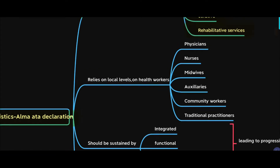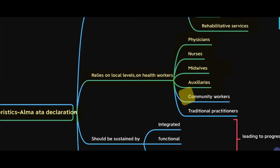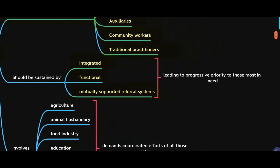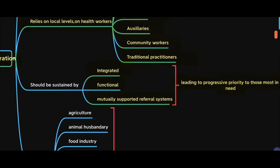The second characteristic is that primary health care on the local level is run by physicians, nurses, midwives, auxiliaries, community workers, and traditional practitioners. The third characteristic — how you sustain it — is through integrated, functional, and mutually supportive referral systems leading to progressive priority to those most in need. This system should be mutually supportive to help prioritize people who require treatment the most.